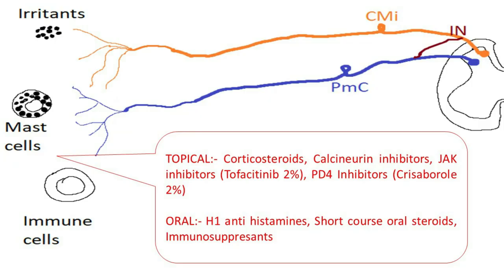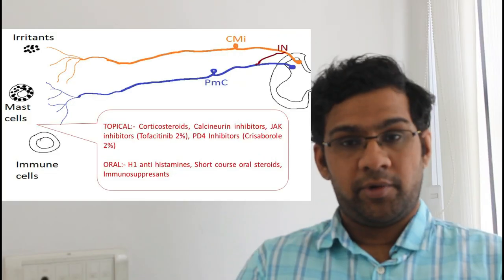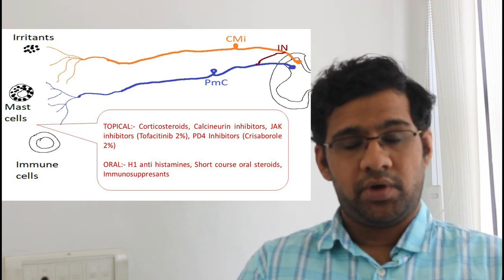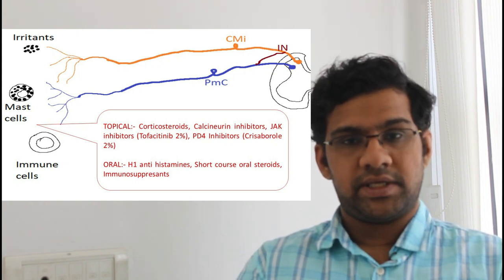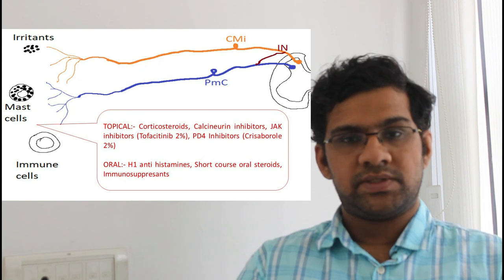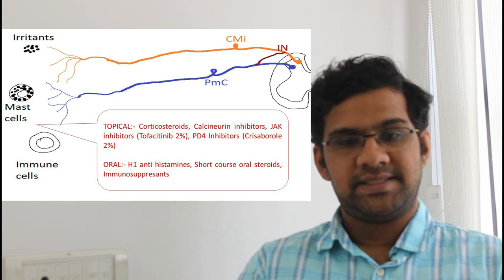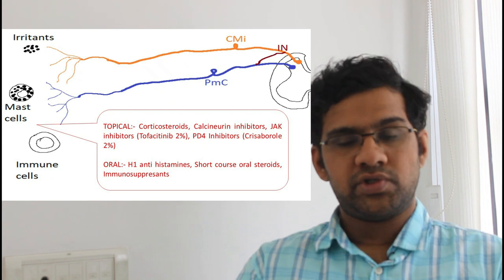Inflammatory triggers of the mast cells and immune cells is dealt by prescribing topical corticosteroids and calcineurin inhibitors. If the pathology is severe, sometimes we use short course of oral steroids as well. Oral H1 antihistamines help in decreasing the production of histamine from the mast cells and other cells and help in combating the most commonest itch stimulus.